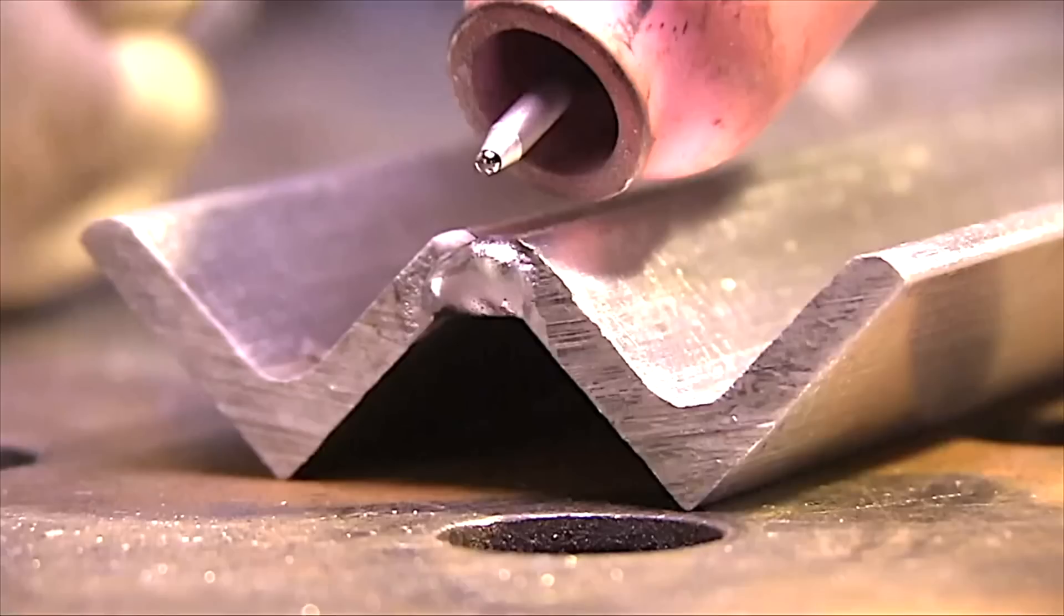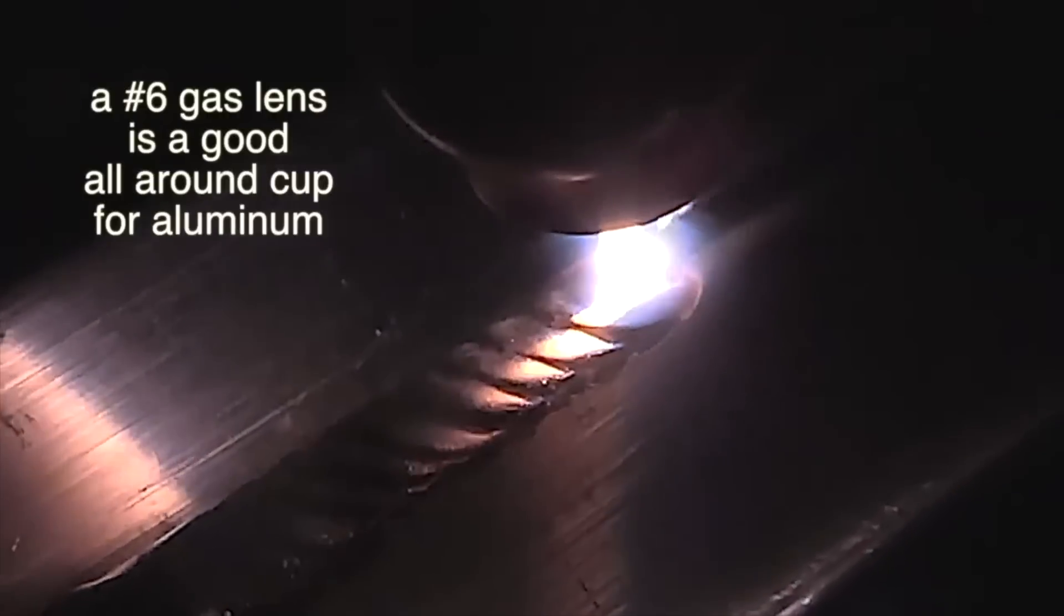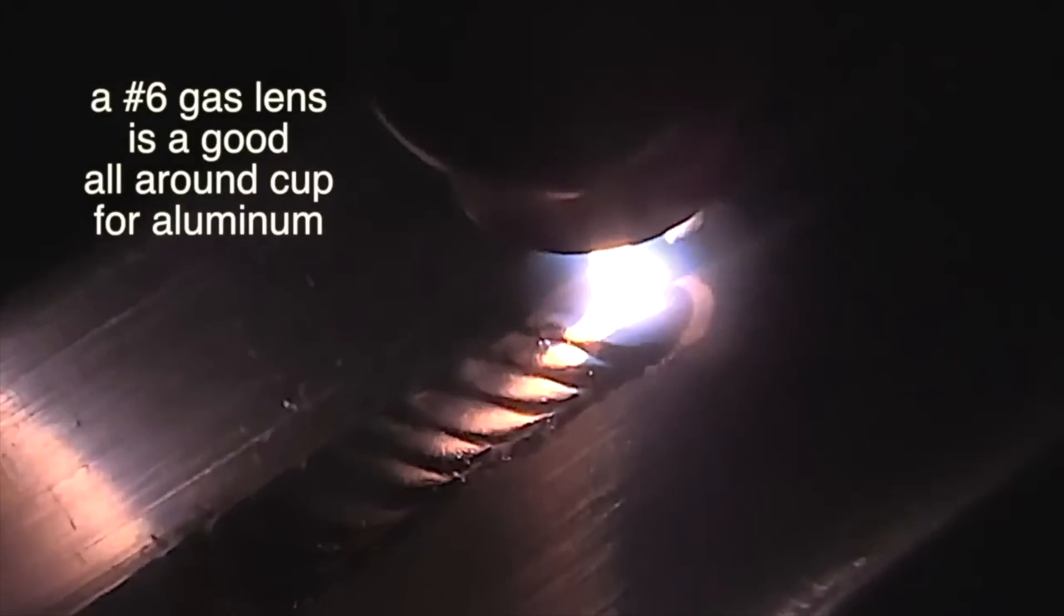A number six is also a really good all-around cup for aluminum. This is an outside corner joint on eighth inch thick material.